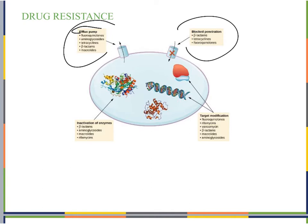With an efflux pump, the bacteria are actively pumping out the antimicrobial. With blocked penetration, the genetic makeup of the bacteria allows it to specifically block the way particular antimicrobials get in.